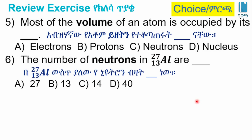Most of the volume of an atom is occupied by its: A: electrons. B: protons. C: neutrons. D: nucleus. The answer is electrons. The nucleus, which contains protons and neutrons, occupies very little of the atom's volume.